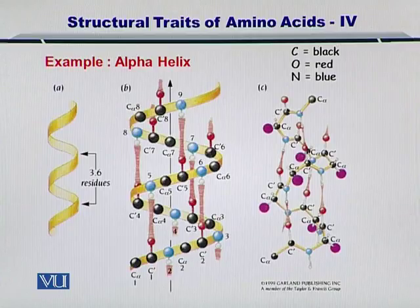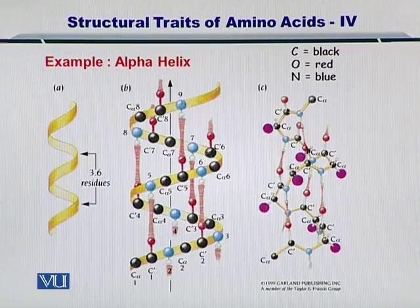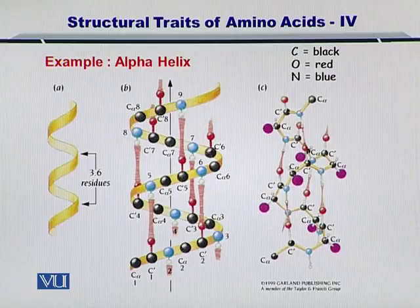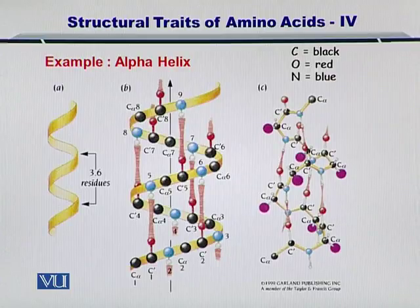The alpha helix, which we will discuss later, is essentially a secondary structure for the proteins. By secondary structure, I simply mean that the amino acids interact with each other and form these structures as a first step towards the formation of more complex protein structures.